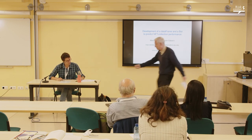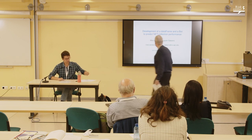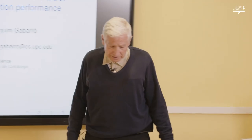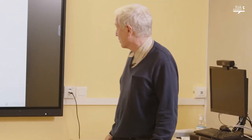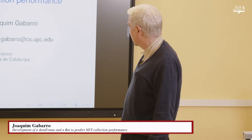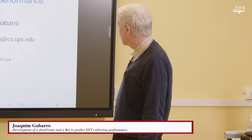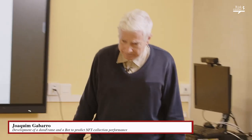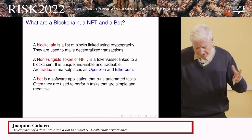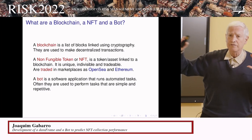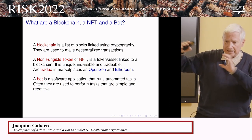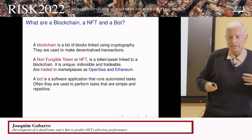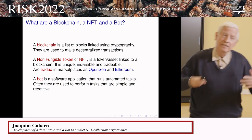I'm Joaquim Gavarró and I'm presenting essentially the work of Marc Urban, because I am the director and Marc cannot be here. The work is about the development of a bot to predict the performance of NFT collections — we are from computer science, so we are interested in programs, meaning we are interested in bots. A blockchain is blocks of information chained through cryptographic keys, very useful for making decentralized transactions that can be entirely public. An NFT — a non-fungible token — is an asset or token linked to a blockchain that is unique, indivisible, and tradable.